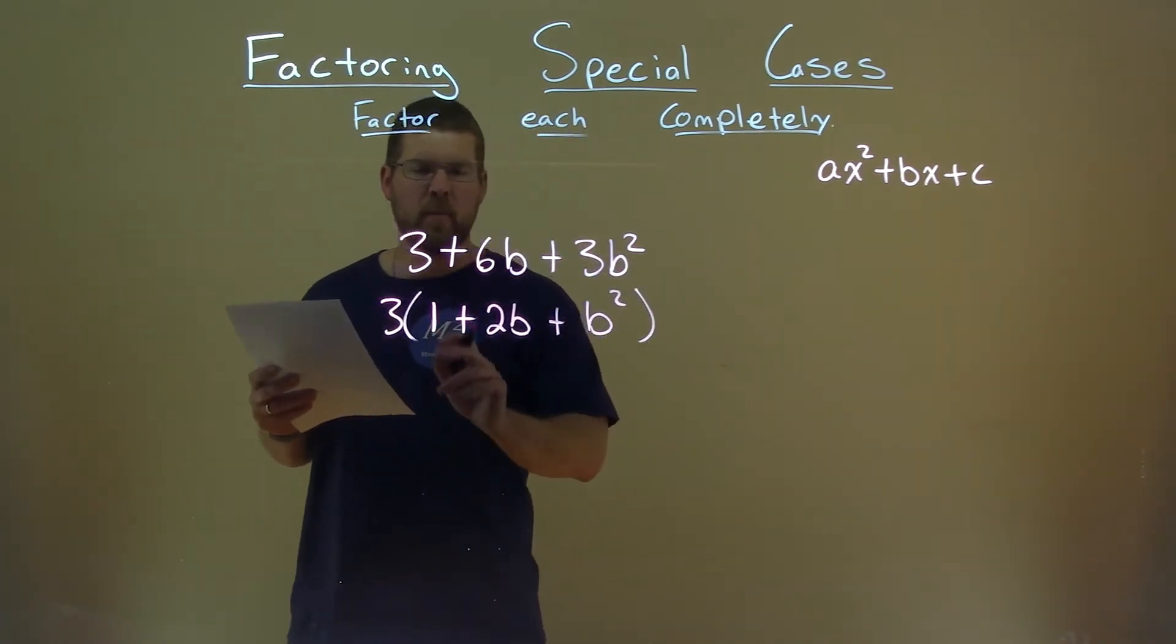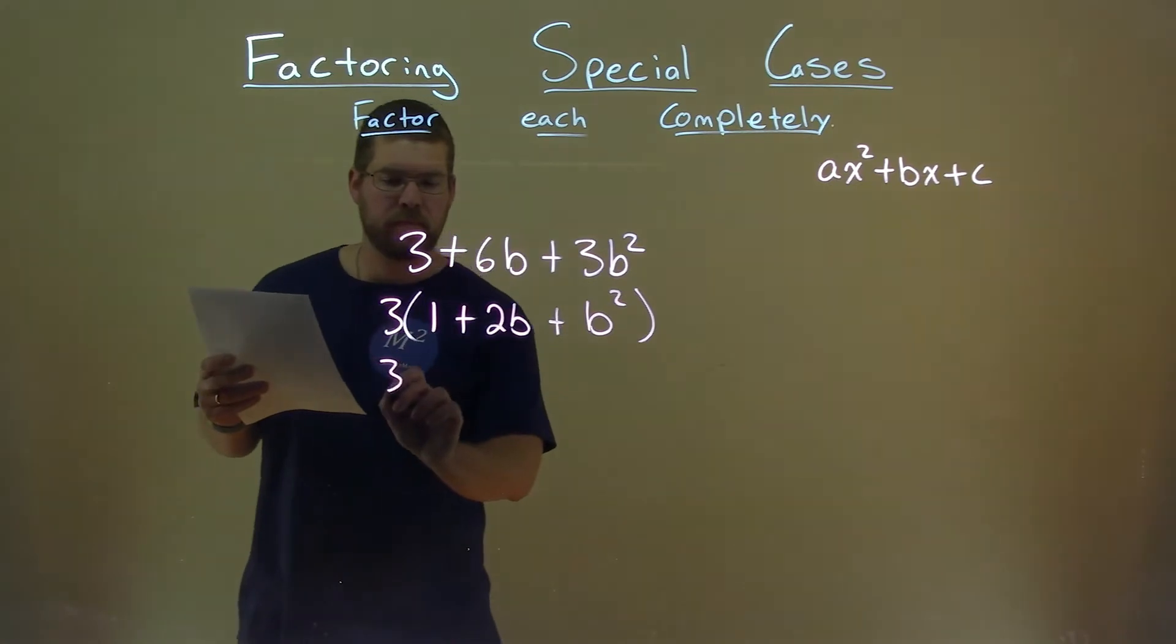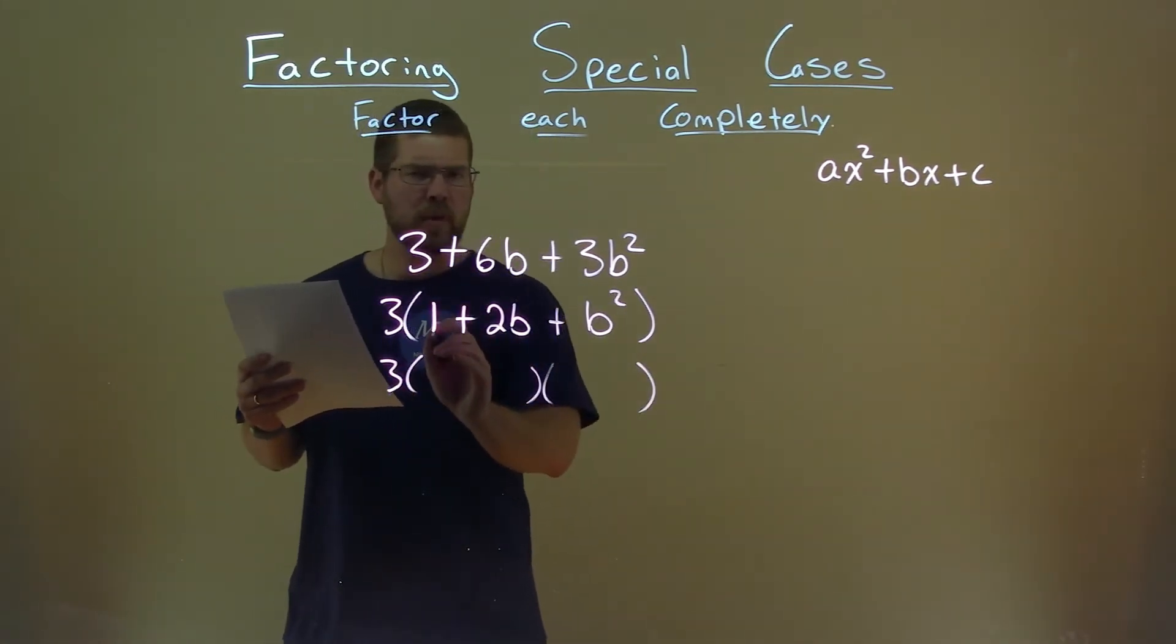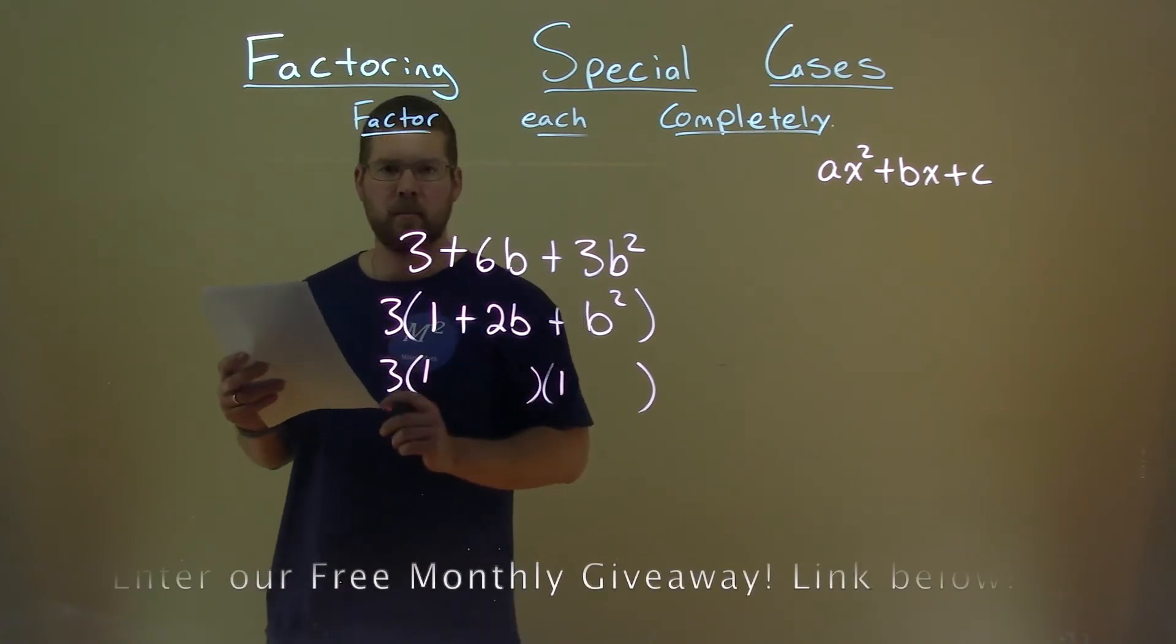Well, notice the b squared and the 1 are both perfect squares. So what does that do for us here? Well, the square root of 1 is 1, so that 1 times 1 gets us that 1.